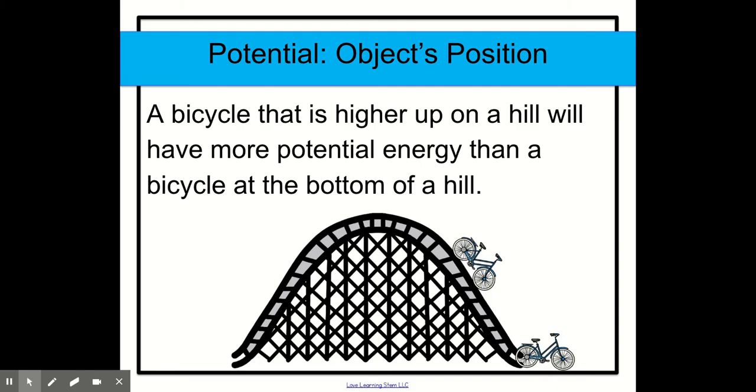So what about a bicycle that is higher up on a hill? Will it have more potential energy than a bicycle at the bottom of a hill? Yes. The answer to that is a yes. The higher the bicycle is, the higher the potential energy will be. When it is stopped, you see the bicycle moving down. It has kinetic energy when it is moving down. But when you have the bicycle that is stopped at the very top of the hill, it has most potential energy. Then it will go down and have kinetic energy. And then when it stops at the bottom of the hill, it will have potential energy again.